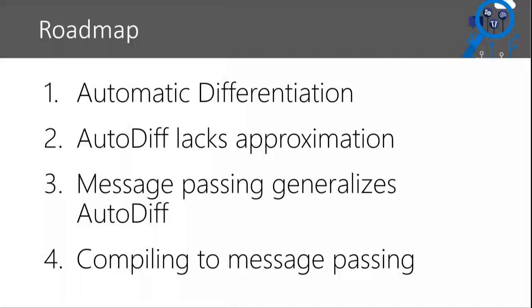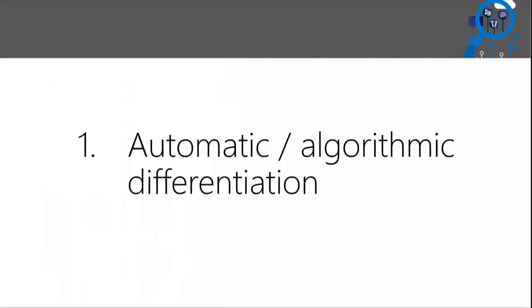I'll also talk about how you can do a source-to-source transformation for automatic differentiation and extend that same transformation for message passing. Now, there's some confusion out there: some people use the term automatic differentiation to mean any method for computing a derivative automatically. That's not what I mean in this talk. I'm talking about a very specific algorithm, which tends to be called in the literature algorithmic differentiation. I'm so used to saying autodiff and automatic differentiation that I probably won't be that precise, but that is what I mean.